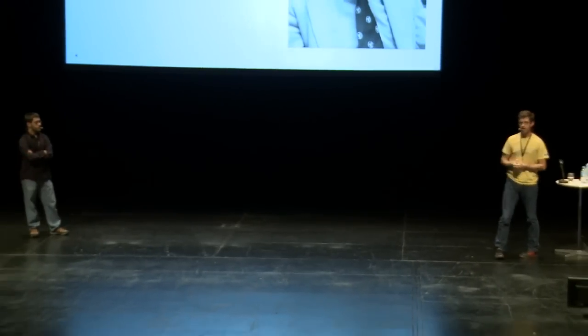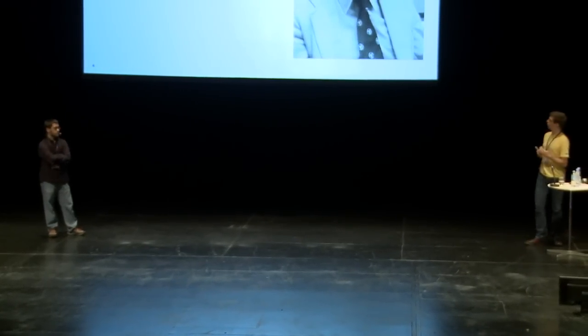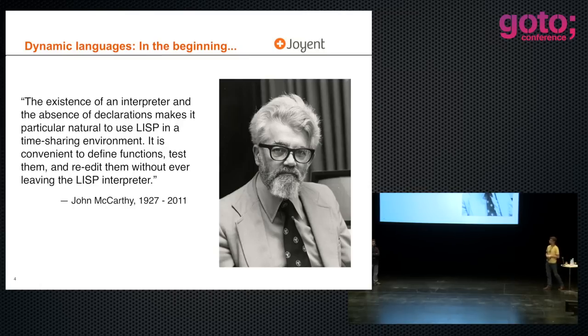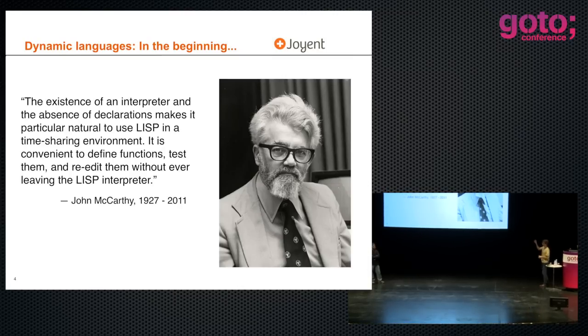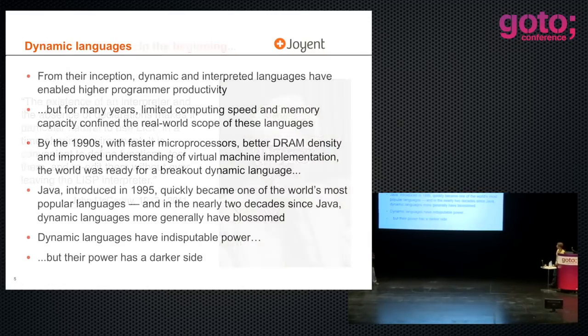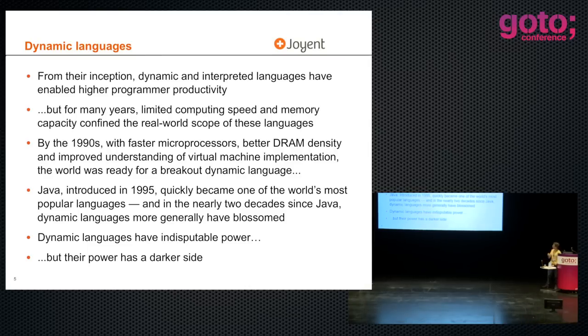It's actually very interesting to read the history of Lisp. It was an interpreted language almost by accident — they were trying to design a compiled language on the IBM 704. It kind of fell out that it was actually just easier to implement things as interpreted. And then they made this incredible discovery that once the language was interpreted, you could actually move faster. From the very beginning, dynamic interpreted languages were about programmer productivity.